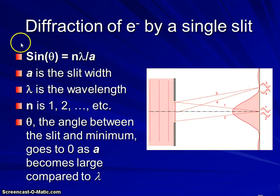If we look at the sign of the angle between the slit and a minimum, we will see this relationship be obeyed, where a is the width of the slit. Lambda is the wavelength associated with electrons based on their mass and velocity. N is some whole number, a quantum number, we're going to start to call these whole numbers. And theta is that angle. That angle will go to zero as a becomes large compared to the wavelength.